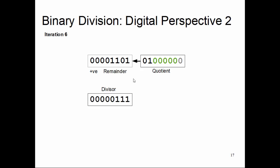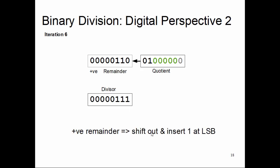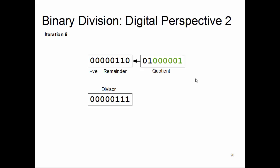At a certain point, the subtraction becomes positive. We look at the LSB — it is grayed out as a zero, meaning it is a potential quotient bit but not yet finalized. When the remainder is positive, we need to flush out that potential zero at the LSB and insert a one as the quotient bit. To do this, we first do a right shift and insert back a one.